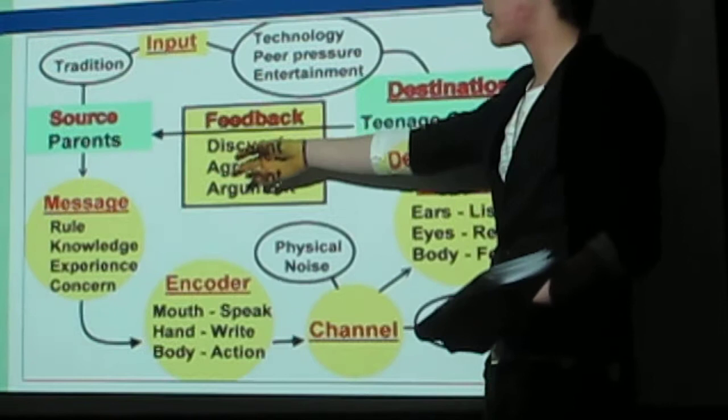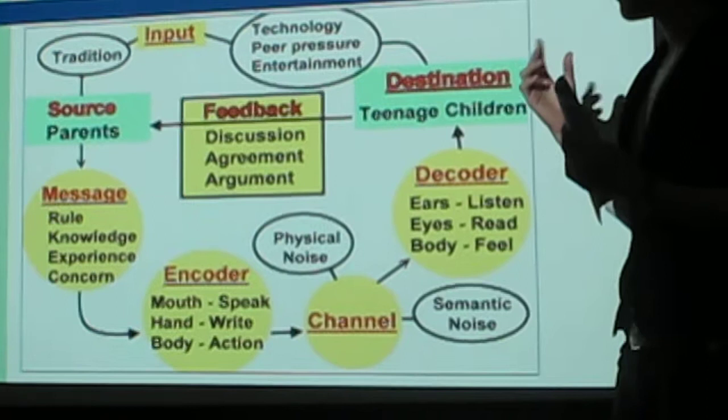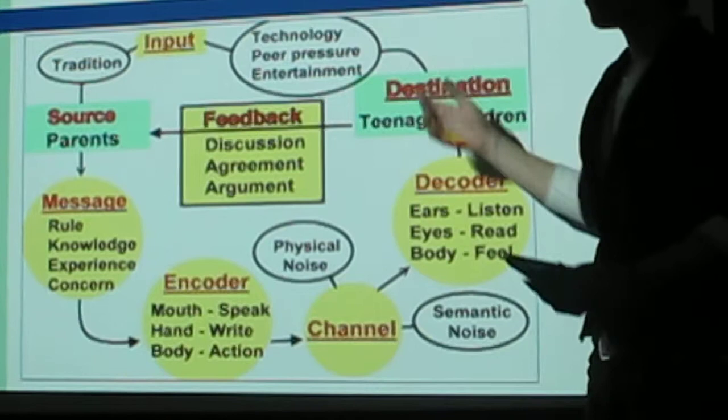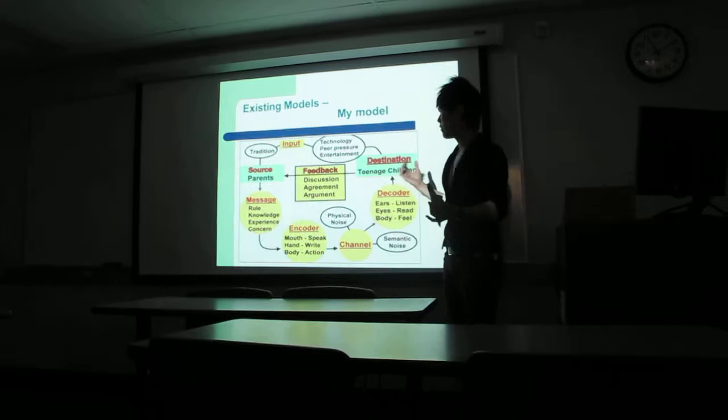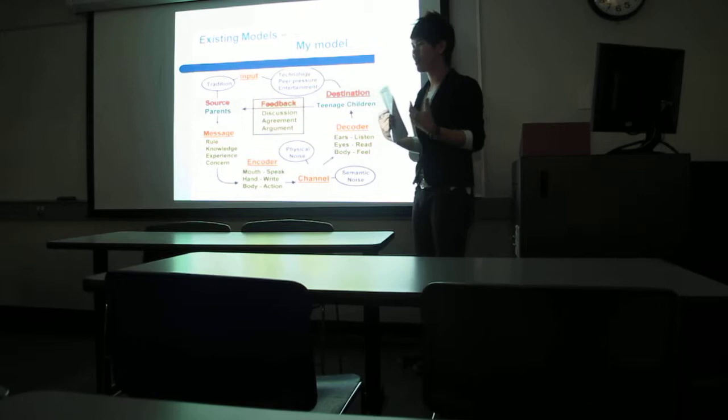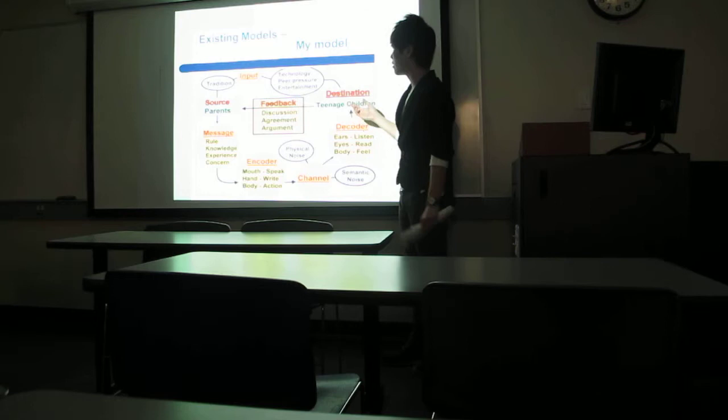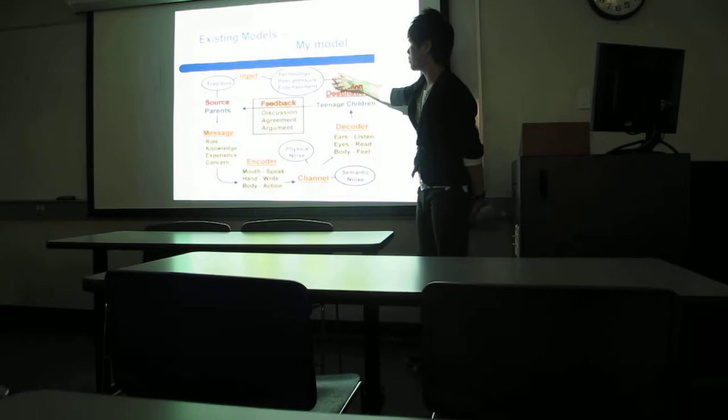At this time they also have some mind input to the teenage children. It is the technology, for example the internet, cell phone, or TV. And peer pressure - maybe they will ask their friends what they can do. Then their friends will share their experience. And entertainment. These three inputs will influence the children's mind, so the feedback will be affected.